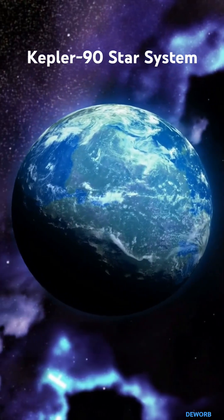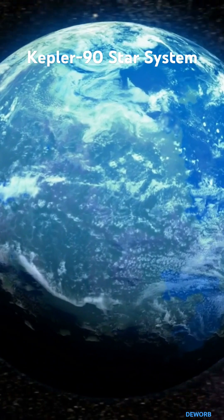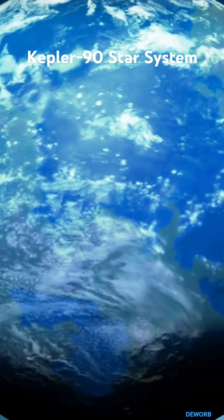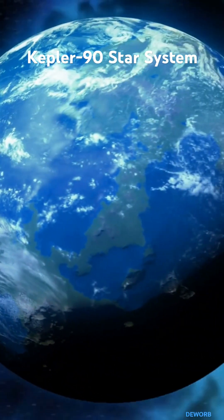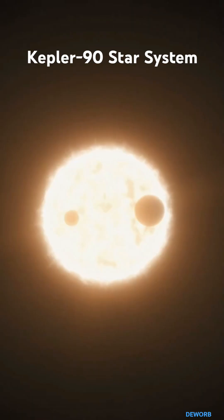Imagine a solar system that mirrors our own, but with a twist. The Kepler-90 system, located about 2,545 light-years away, is home to 8 known planets, making it the first system discovered with as many planets as ours.